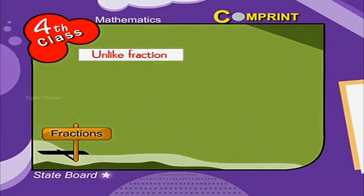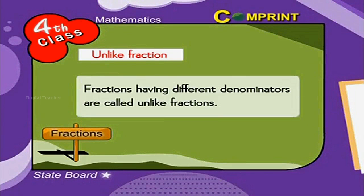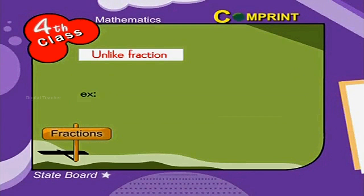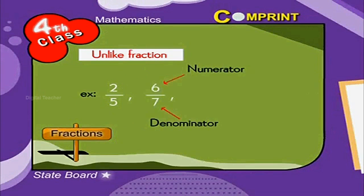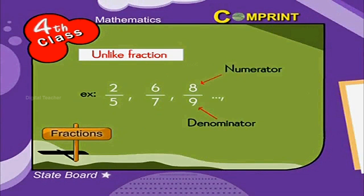Unlike fractions: Fractions having different denominators are called unlike fractions. For example, 2 by 5, 6 by 7, 8 by 9, and so on.